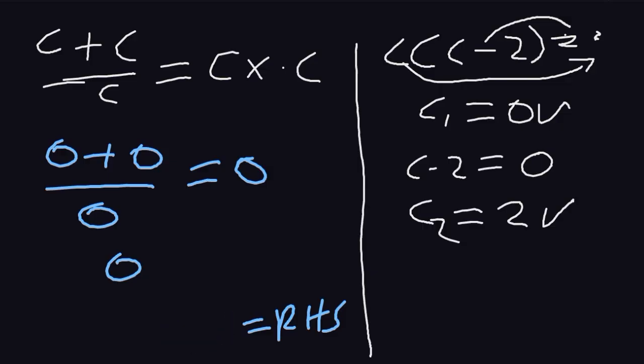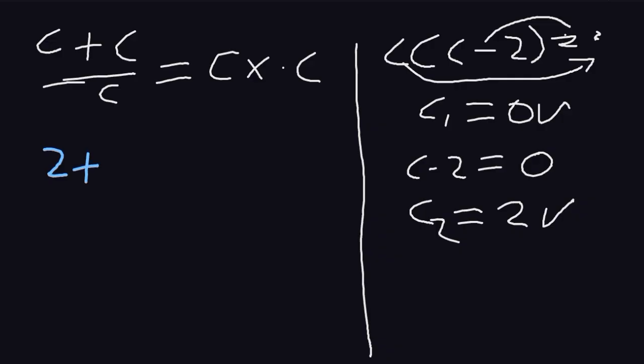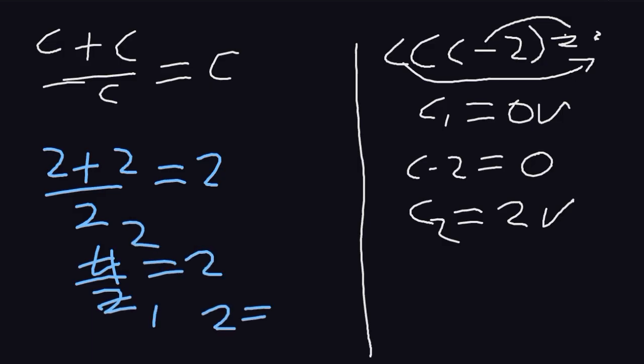Now what about when using 2? If we use 2, then we have 2 plus 2 divided by 2, which should give us 2. 2 plus 2 is 4, 4 divided by 2 is 2. 2 is equal to 2. This second value of c also satisfies our expression.